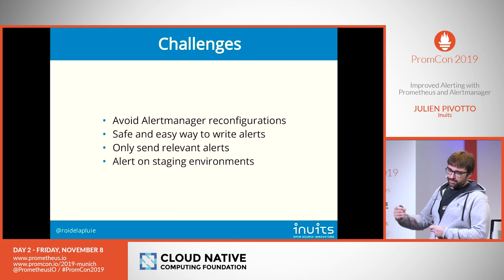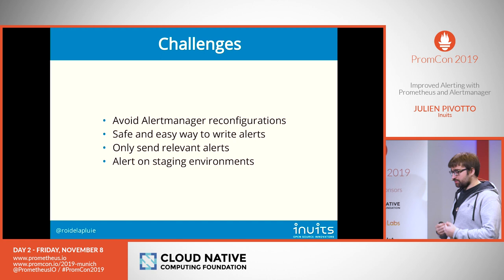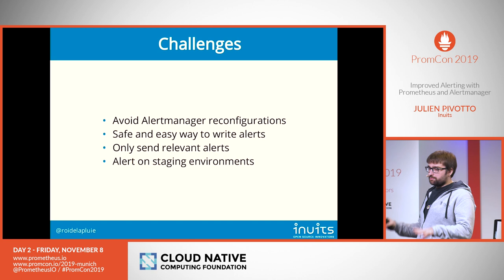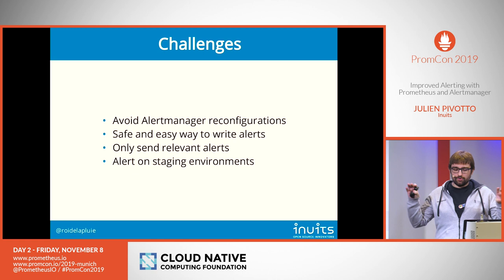We only want relevant alerts — you don't want 10,000 alerts. This was challenging because we have multiple environments on our Prometheus servers. We have multiple big Prometheus servers handling production and non-production, and when we upgrade Prometheus we only update half of them, which means they still handle all environments. You need to take that into consideration.